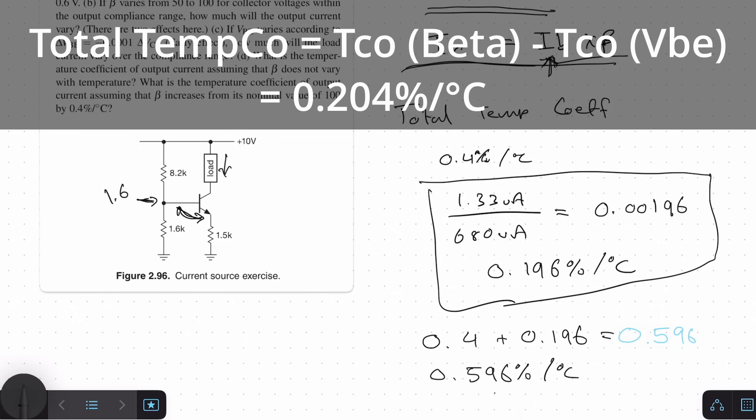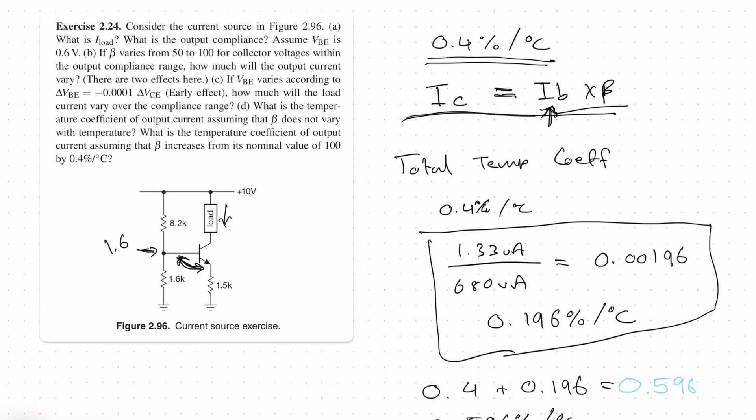So the load current temperature coefficient is 0.596% per degree C and is a summation of the VBE voltage changing and the beta changing with temperature. Obviously, the beta change has a bigger effect, as in it has a 0.4%. Whereas for the solution, we have made a massive assumption in that the IB remains fixed. Now in the real circuit, that probably won't remain fixed. And there's going to be a more complex solution to this question. So if you know how we can involve a change in IB as well with temperature, for this question, please let me know in the comment section below and share your solution with the community. That will be much appreciated.